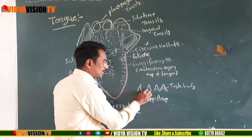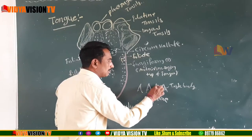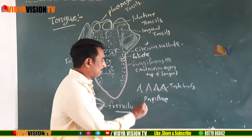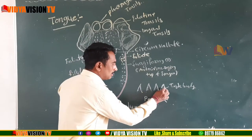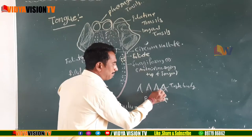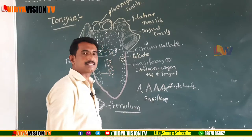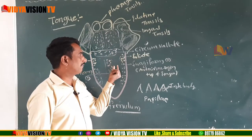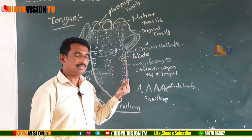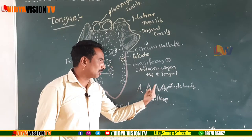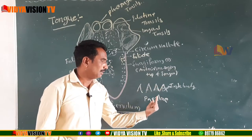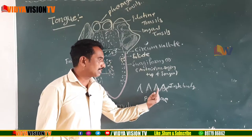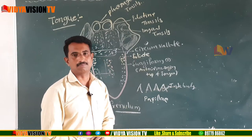On the surface of the tongue there are small projection-like structures called papillae. These papillae bear taste buds.